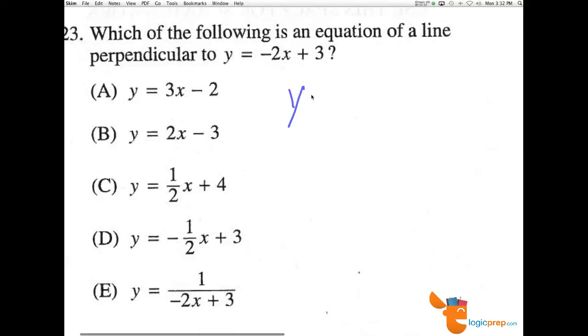This problem should be fairly easy for students attempting this math level 2 test. We're given the y equals mx plus b form of a line. We know that m is the slope and b is our y-intercept.